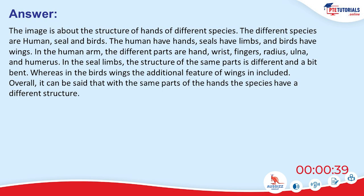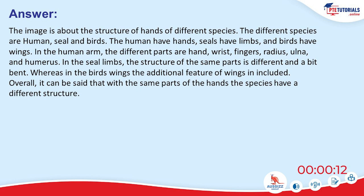The image is about the structure of hands of different species: human, seal, and birds. Humans have hands, seals have limbs, and birds have wings. In the human arm, the different parts are hand, wrist, fingers, radius, ulna, and humerus. In the seal limbs, the structure of the same parts is different and a bit bent, whereas in the bird's wings an additional feature of wings is included. Overall, with the same parts, the species have a different structure.